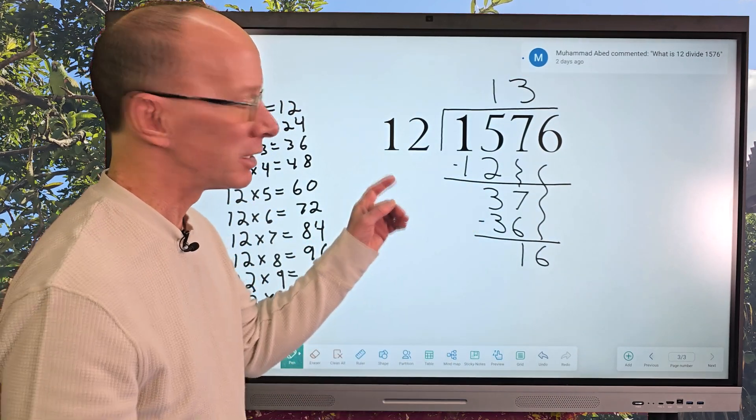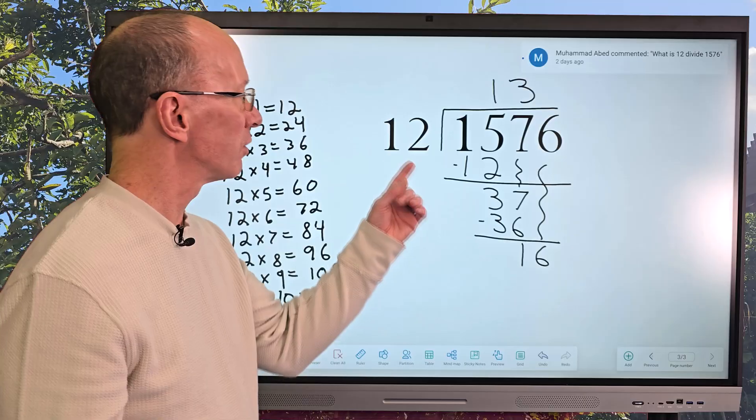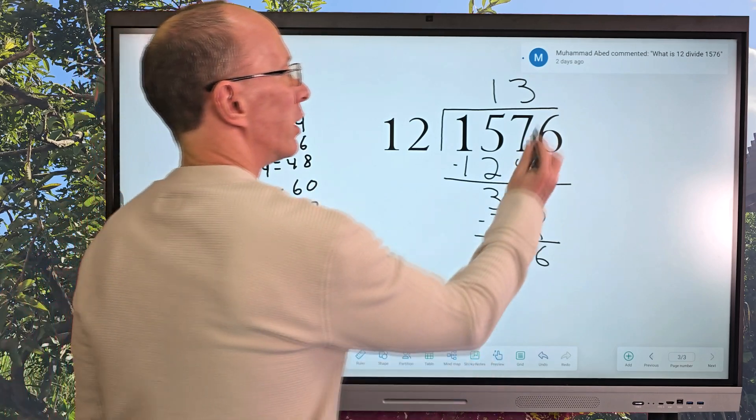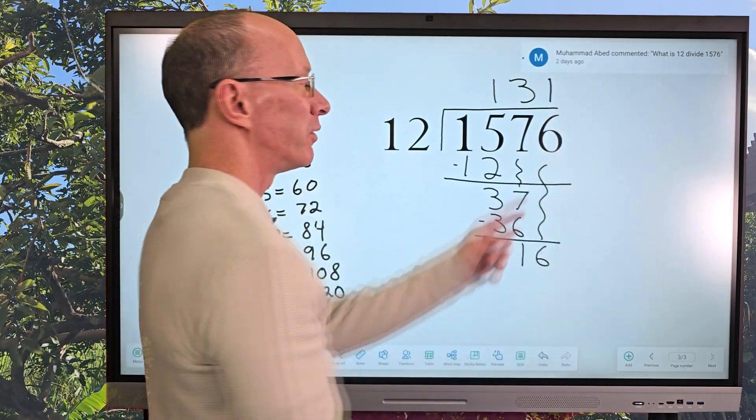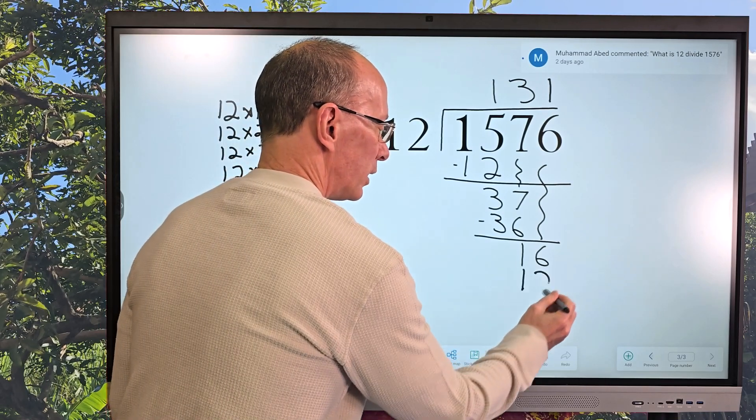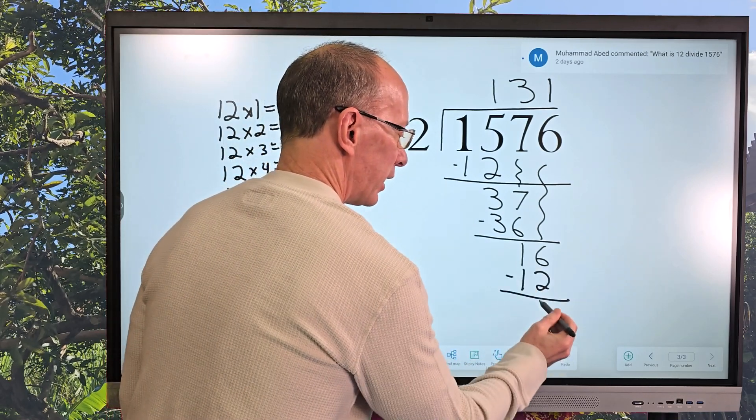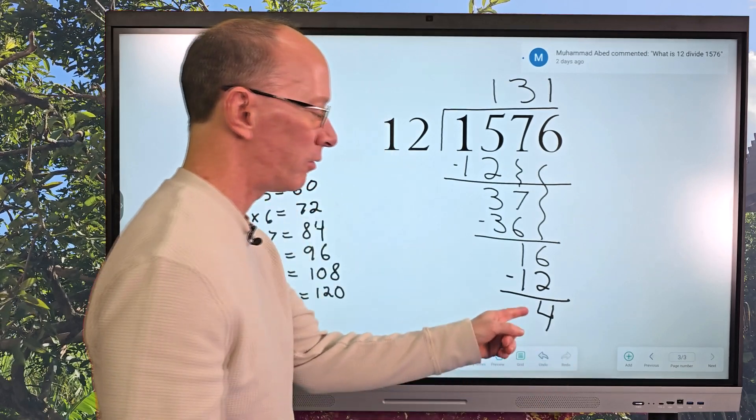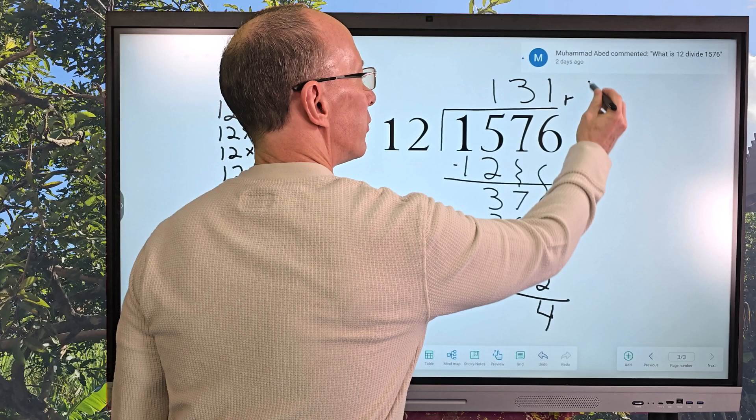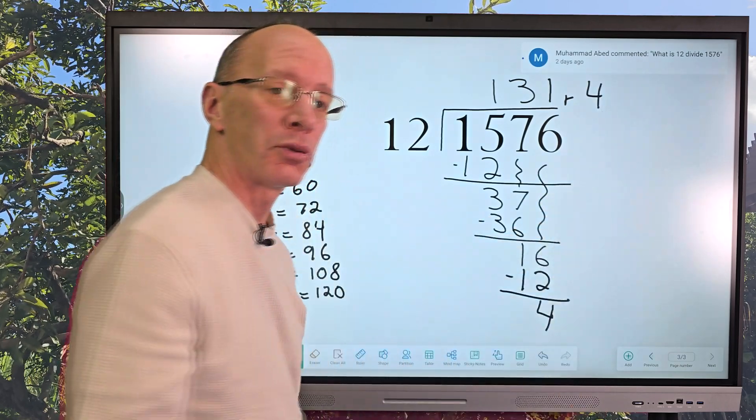Now I start that process all over again. So how many times can I put 12 into 16? One time. I'm going to go ahead and put the 1 right above the 6 right here. So 1 times 12 equals 12. Subtract. And then I have a remainder of 4. So I put an R right here. And then a 4 right there. Pretty cool.